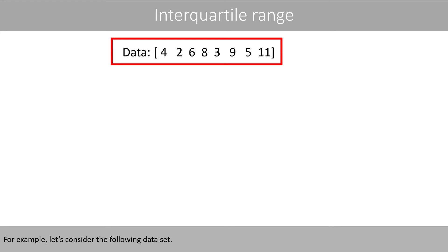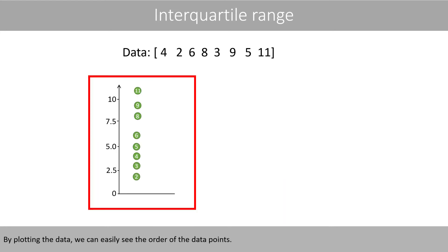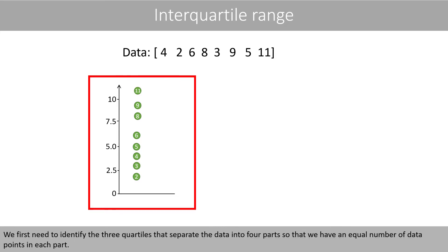For example, let's consider the following dataset. By plotting the data, we can easily see the order of the datapoints. We first need to identify the three quarters that separate the data into four parts so that we have an equal number of datapoints in each part.